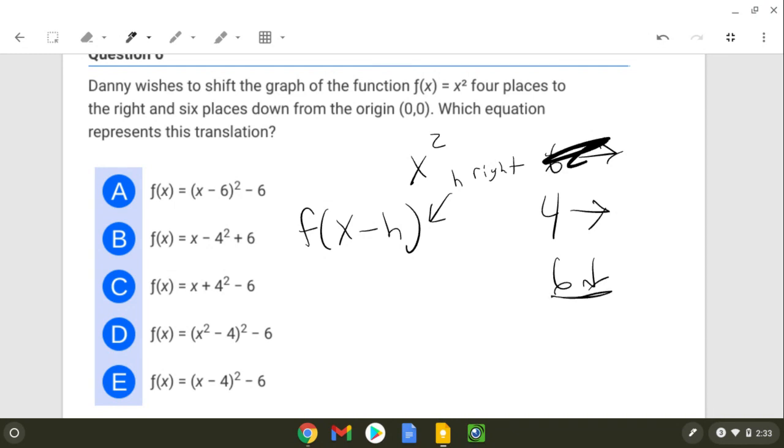And then if you want to move something down, f of x minus k is usually how they do it. This is to move something down. You're going to subtract on the outside.